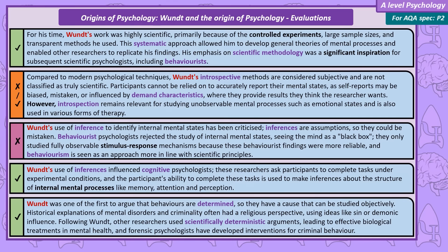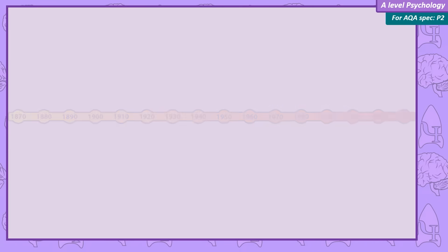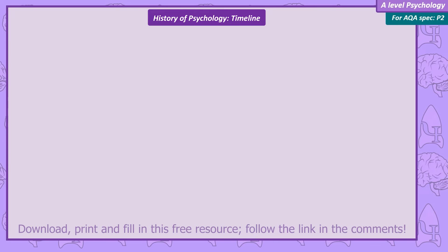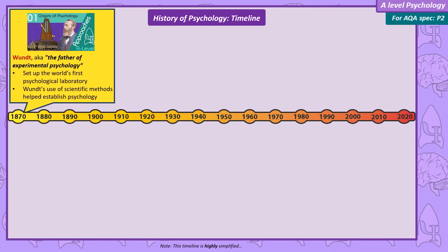So that was Wundt, at the start of what we consider modern psychology. In those evaluations, I mentioned the names of some later approaches to psychology. So before we move on to individual videos diving deep into each psychological approach, let me give you an overview of the development of psychology over the following 150 years by introducing each approach on a timeline up to the modern day.